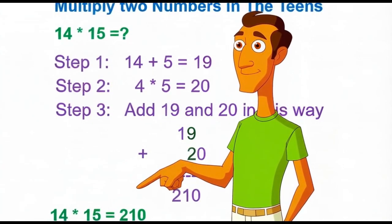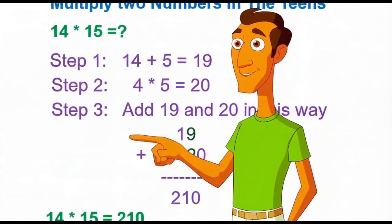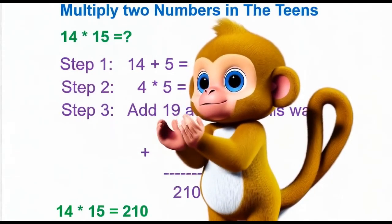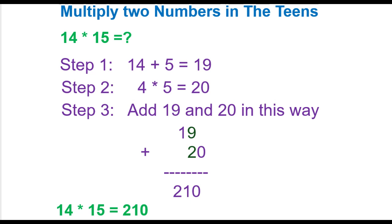Step 3: Add the results of step 1 and step 2. Line up the one's place of step 1 and 10's place of step 2 and get 210. So 14 times 15 equals 210 easily without a calculator and fingers.